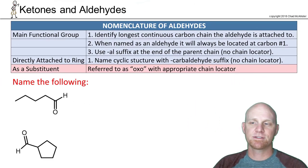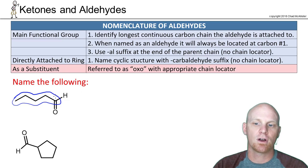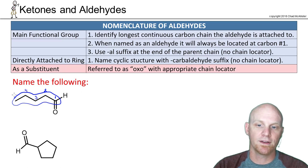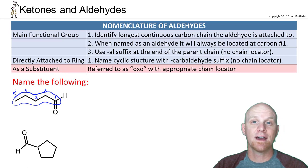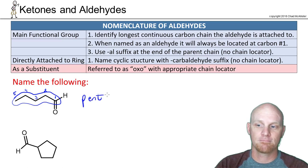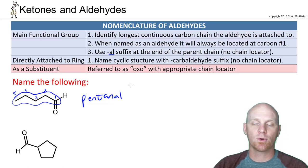When naming an aldehyde as the main functional group, find the longest continuous carbon chain it's attached to. This example is five carbons long. The aldehyde is always at the end of the chain, so it's always at position one — you don't include a chain locator because it's automatically implied. So this is simply pentanal. We don't say 1-pentanal or pentane-1-al; that locator is redundant.